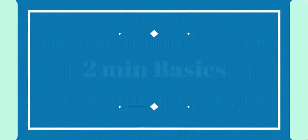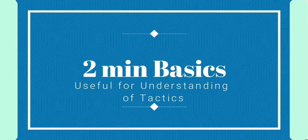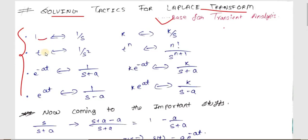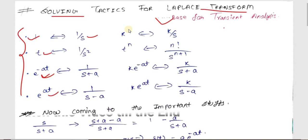In transient analysis you can get various types of voltage sources — it can be constant, it can depend upon time, or it can be in the form of exponential. So if you get a voltage source of 1 volt, the Laplace transform for that will be 1/s, and similarly for any constant k, the Laplace transform will be k/s.